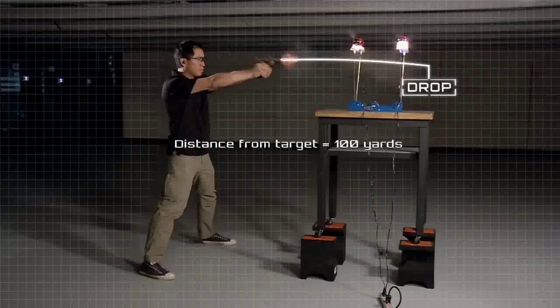Some shooters prefer to minimize the drop by increasing the speed, which creates a flatter trajectory, reducing the need to aim above a target.